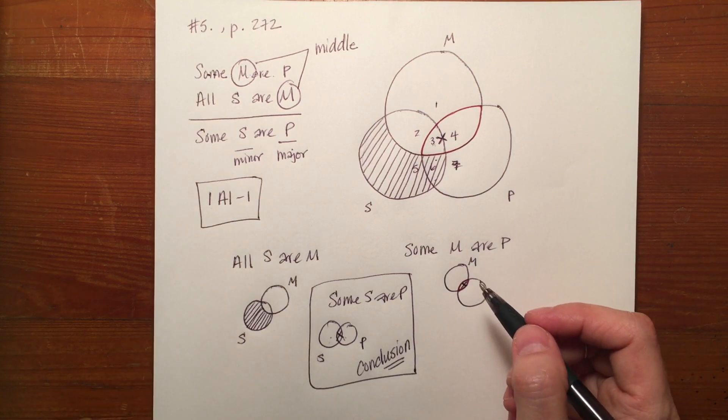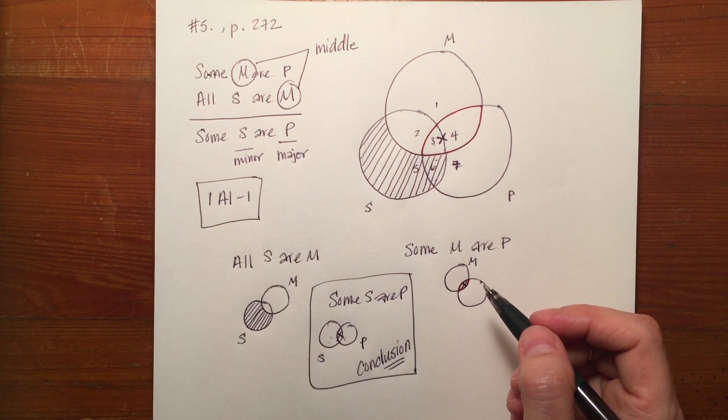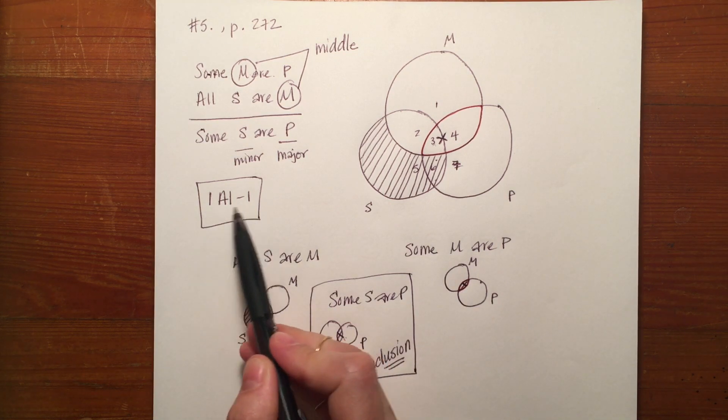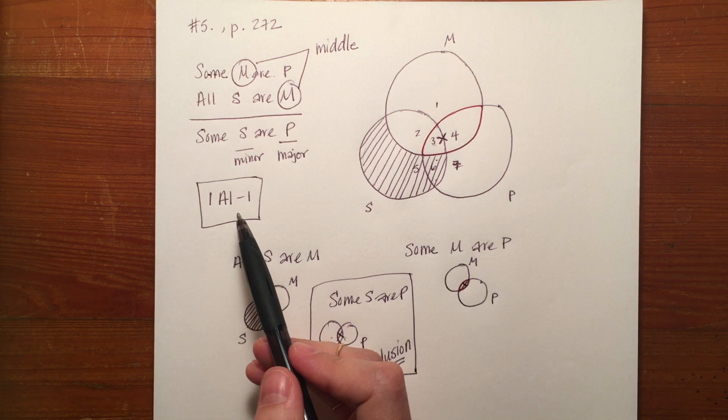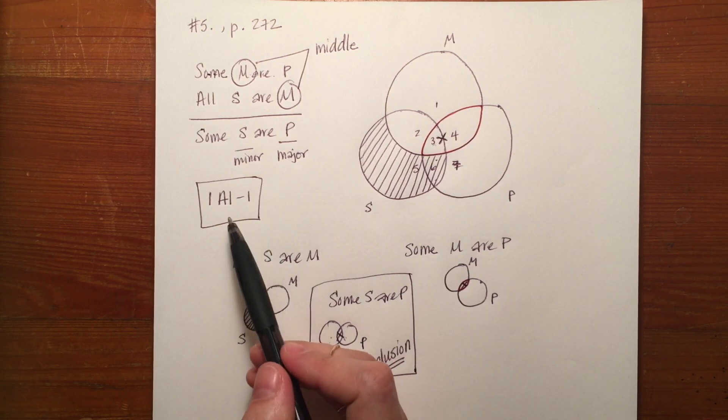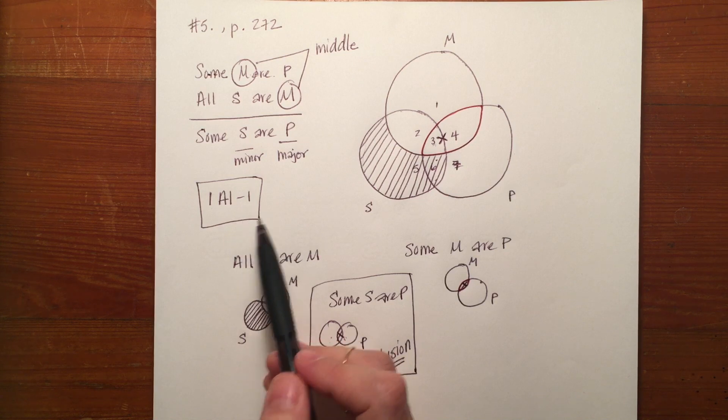So if I look at my unconditionally valid forms chart, IAI-1 is not there. So then I would move on to the conditionally valid forms chart and I'm looking for IAI under figure 1 there.